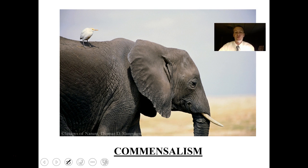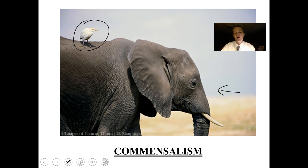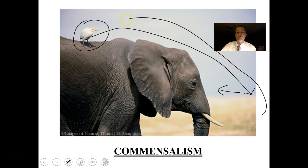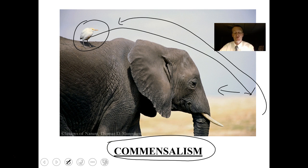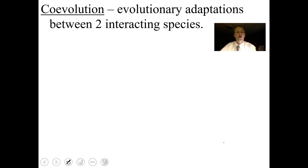Commensalism is a relationship where one organism benefits but the other is neither harmed nor helped. The cattle egret benefits by swooping down to eat insects disturbed by a walking elephant, then returns to the elephant's back to wait for more. Humans also have commensalistic relationships — mites live on our eyelashes eating dead skin; they don't harm or help us but benefit from us. Many bacteria and organisms that live on or inside us are commensals.